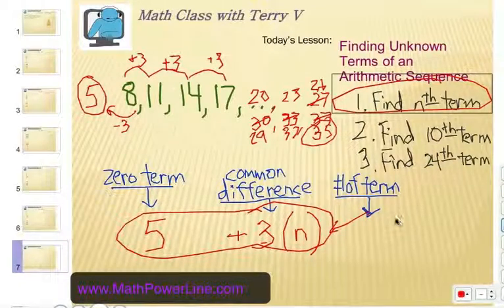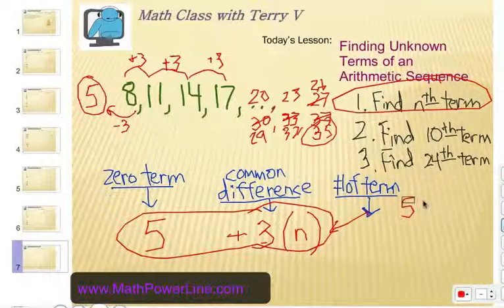So, let's go ahead and substitute that in there. For the 10th term, we thought it was 35, so let's try that out. 5 plus 3 times, if we're looking for the 10th term, that would be 3 times 10. Is that 35? Yes.